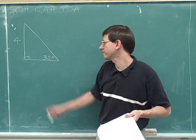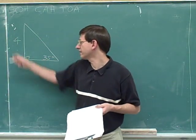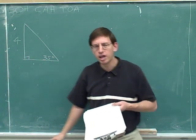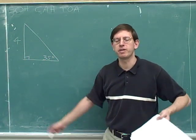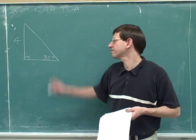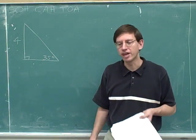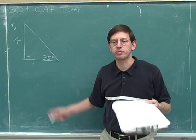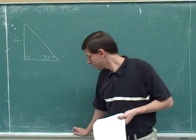Here's another right triangle. I've given you this angle of 35 degrees and this side which has a length of four. Please pause the video and try to use the methods and techniques we've already discussed to figure out everything you can about this triangle. If you have any trouble, remember to use the same notation that we've been using on the previous problems.